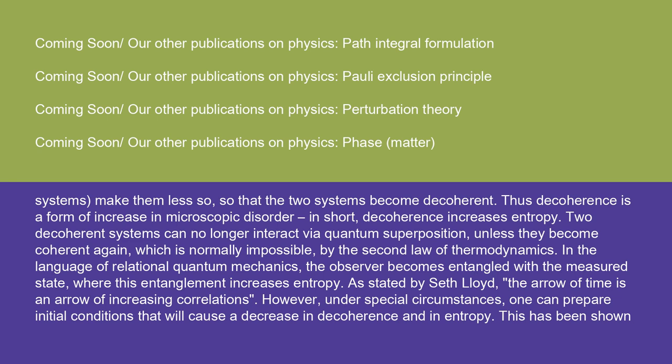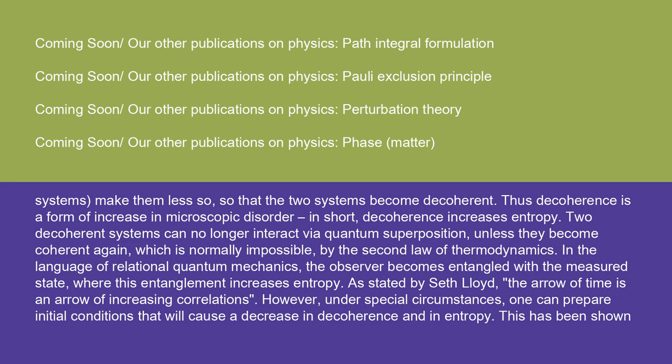However, under special circumstances one can prepare initial conditions that will cause a decrease in decoherence and in entropy. This has been shown experimentally in 2019, when a team of Russian scientists reported the reversal of the quantum arrow of time on an IBM quantum computer. By observing the state of the quantum computer — made of two and later three superconducting qubits — they found that in 85 percent of the cases, the two-qubit computer returned to the initial state. However, according to estimations, throughout the age of the universe — 13.7 billion years — such a reversal of the electron state would only happen once for 0.06 nanoseconds.